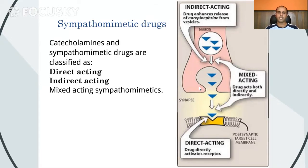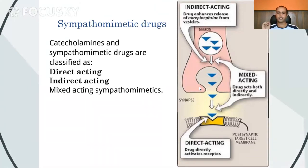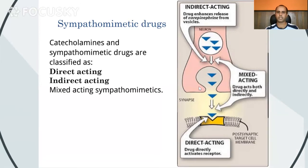The drugs that act by increasing the release of neurotransmitters are called indirectly acting drugs. Mixed acting drugs are those that directly act at the receptor level and also indirectly cause the release of neurotransmitters. These are called mixed acting sympathomimetics.